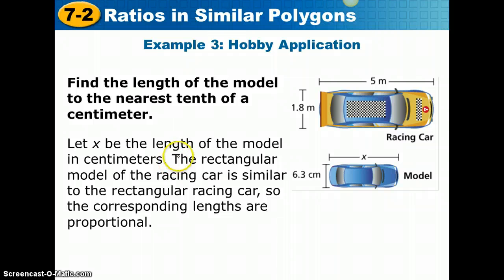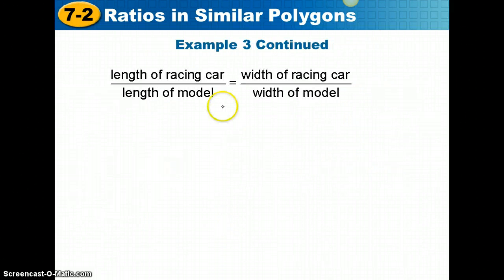We're going to let X be the length of the model in centimeters. The rectangular model of the racing car is similar to the rectangular racing car itself, so the corresponding lengths are proportional. We can set up a ratio of length to width of the model, which would equal length to width of the racing car. Or we could write the ratio of length of the racing car to the length of the model equals width of the racing car to width of the model. Either proportion will give us the same final answer, even though they will look different at the beginning.